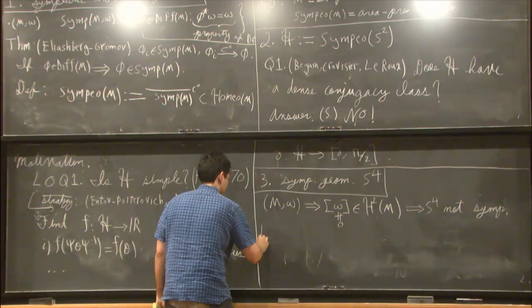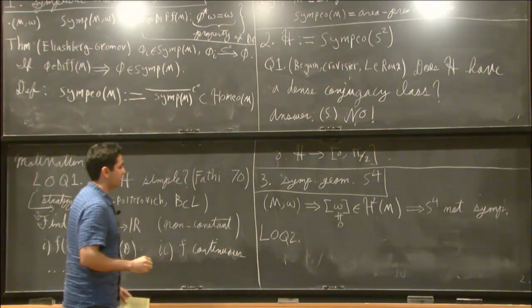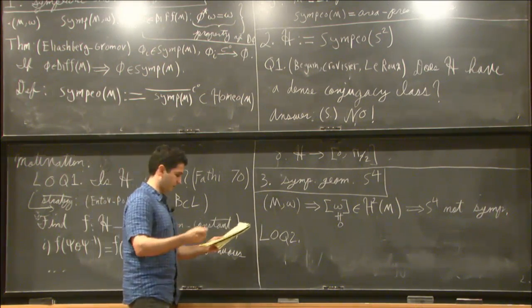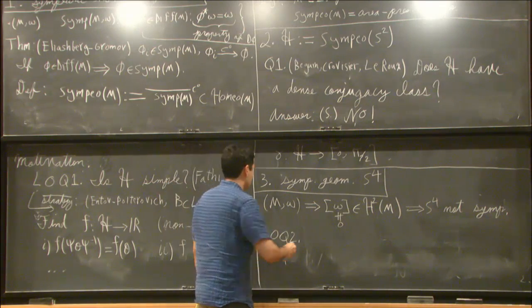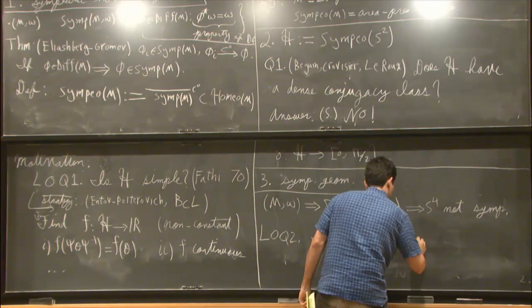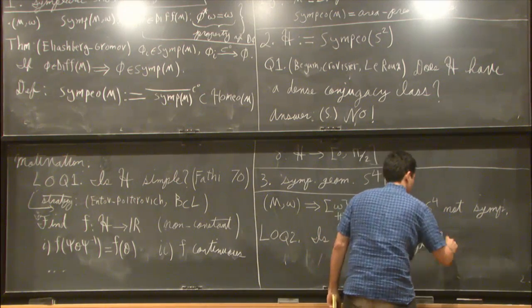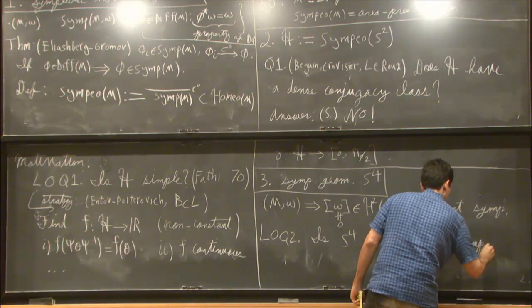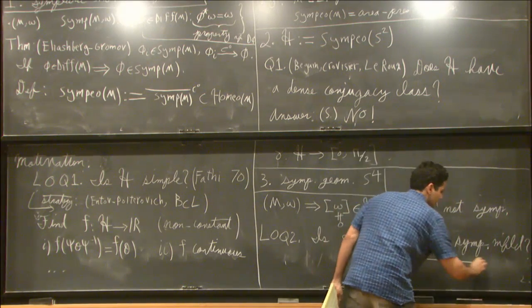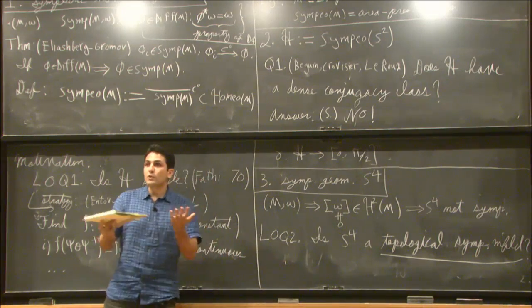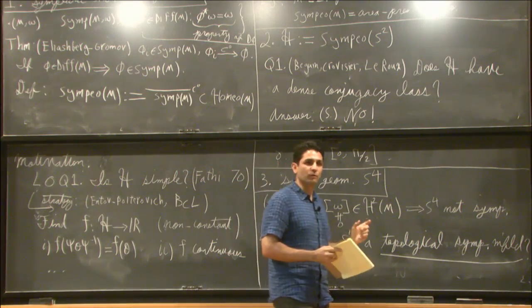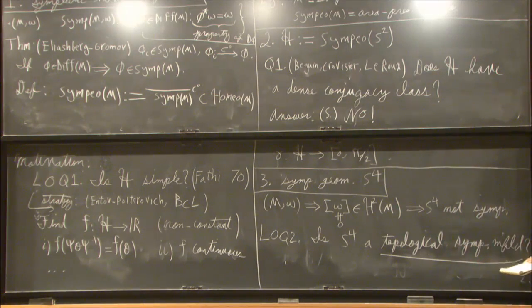Now here's the second long-standing open question. This is one of my favorite questions in continuous symplectic geometry, and I think it goes back to the time when this theorem was discovered, and I believe Helmut is very much interested in this question too. Is S4 a topological symplectic manifold? So you could probably guess what I mean by a topological symplectic manifold. Now we have this notion of symplectic homeomorphisms, so a topological symplectic manifold is a manifold equipped with an atlas whose transition maps are all symplectic homeomorphisms. And it is not known whether S4 admits such structure or not.